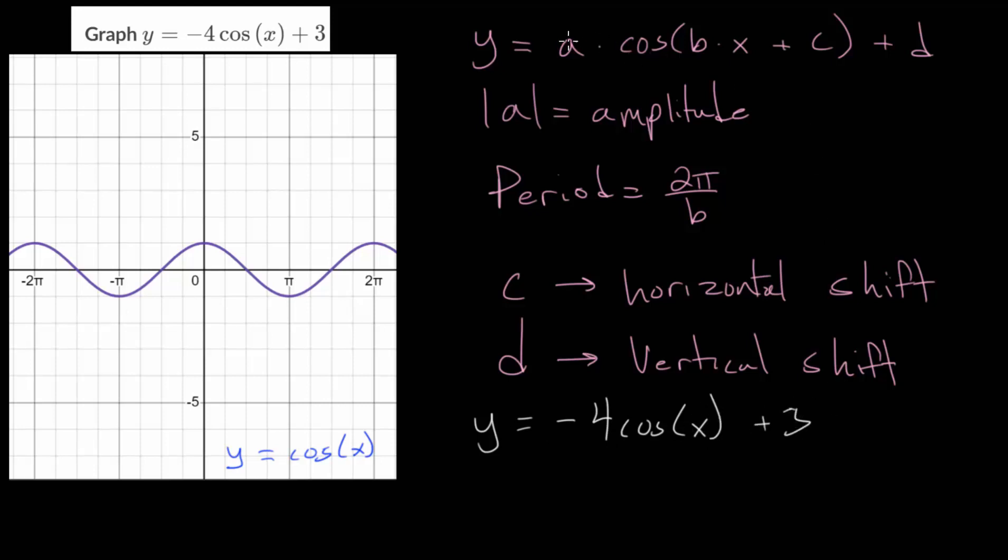From here, we can determine what a, b, c, and d are. We can see that a is -4. For b, the coefficient on x, that's just 1, so the period won't change. c is 0. There will be no horizontal shifting. And the d value is 3, meaning that the new midline equation would just be y equals 3.